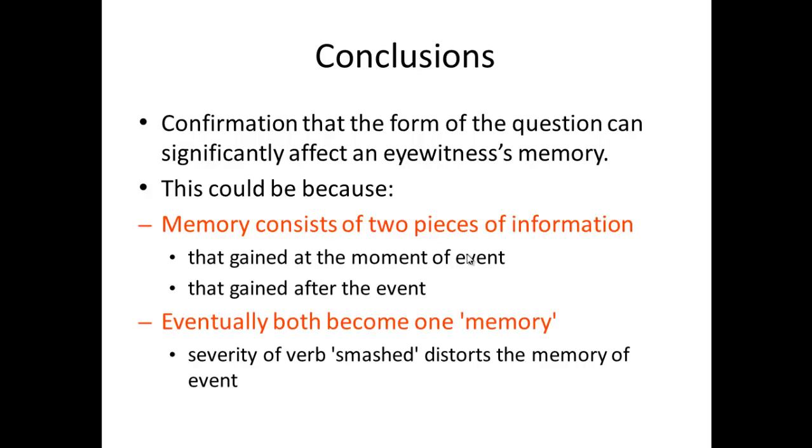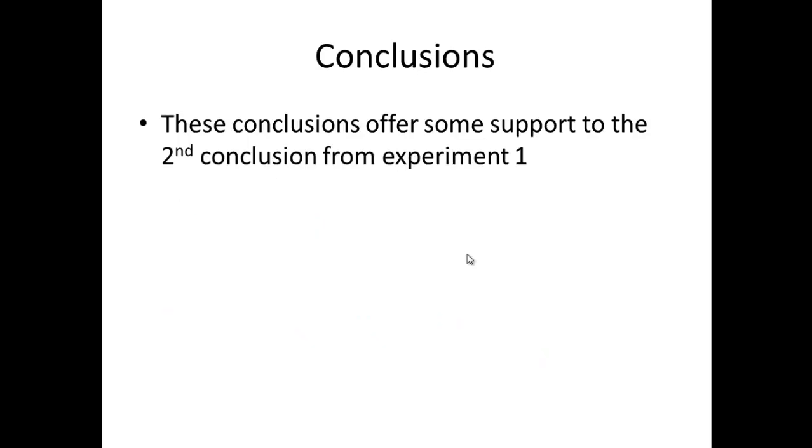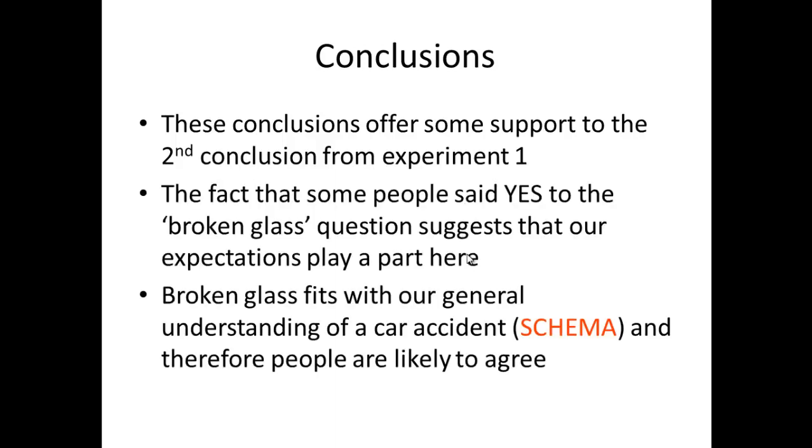Using that verb smashed, even though it's information that's gained after the event, you integrate it into your original memory of the event, it distorts it, and then you can't kind of pick apart the two. This experiment seems to offer support for the second conclusion from experiment one, the idea that it's not a response bias but it is actually distorting and changing the memory of the event. Broken glass seems to fit with our understanding, our general understanding of what we're likely to see when there is a car accident. Remember, that's the schema, so you hold in your mind a kind of general idea of what a car accident or car crash is like. Broken glass fits with that, and so you're relatively likely to agree that you have seen some because you have an expectation that there would have been glass present.